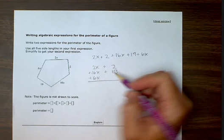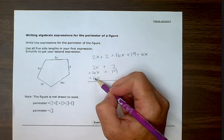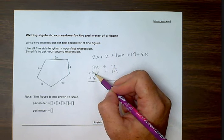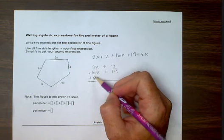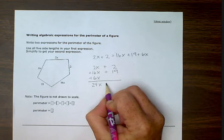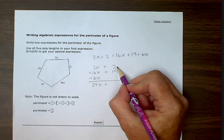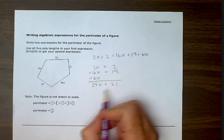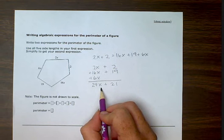So 2x plus 16x plus 6x. 2 plus 16 makes 18. 18 plus 6 gives us 24x. Then we'll add the numbers. 2 plus 19 makes 21. So our simplified answer is 24x plus 21.